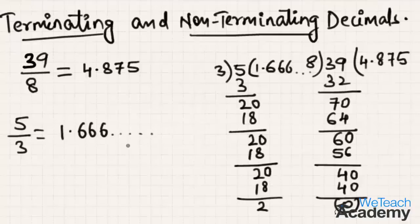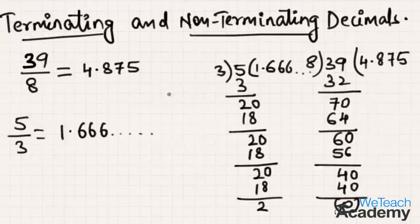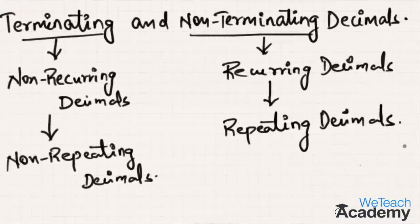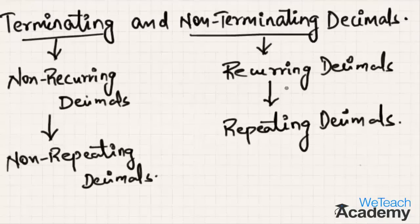This kind of decimal number is called a non-terminating decimal, while the previous kind is called a terminating decimal. Non-terminating decimals are repeating decimals, also called recurring decimals. Terminating decimals are non-repeating, also called non-recurring decimals.